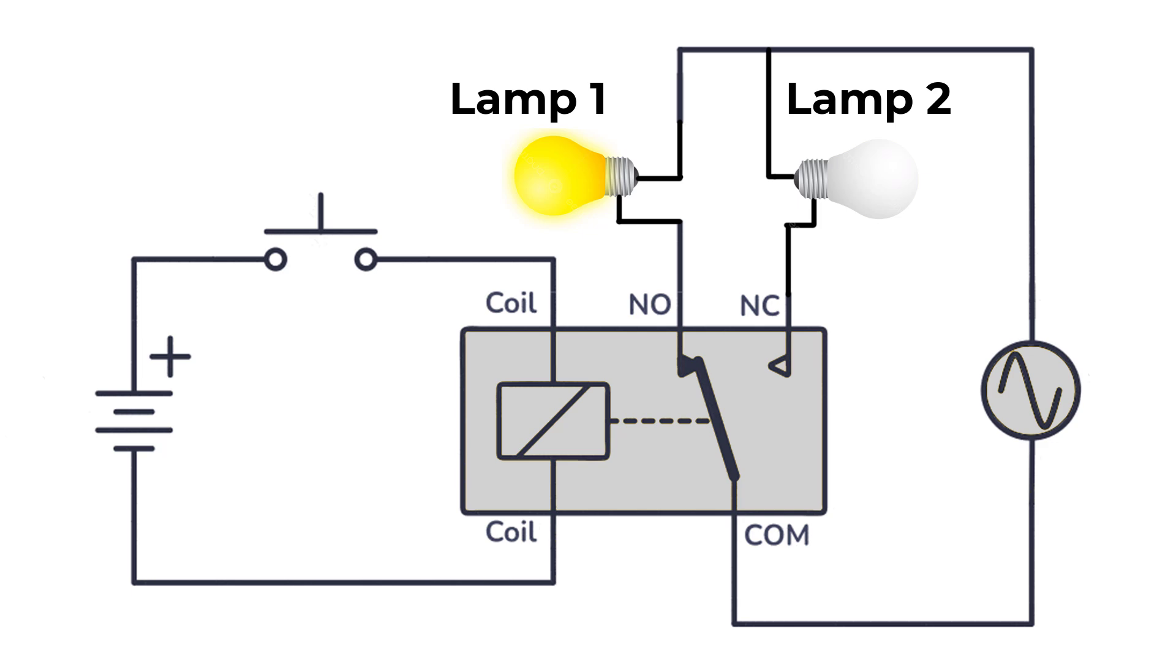If A1 and A2 coil is energized, the relay will be switched by electromagnetic force that causes a mechanical action and common pin will be connected to pin number two. So lamp one will be turned off and lamp two will be turned on.